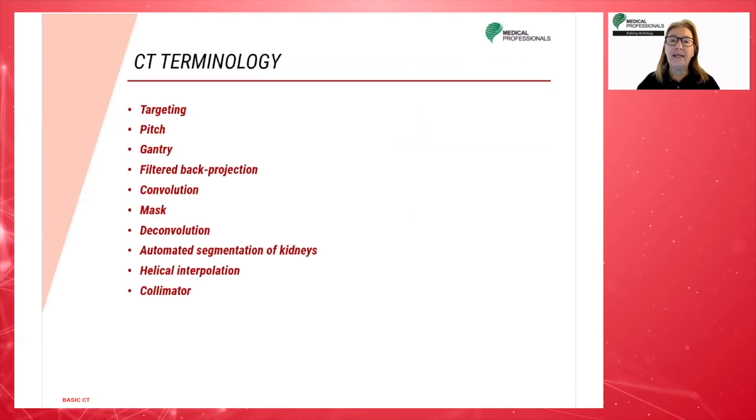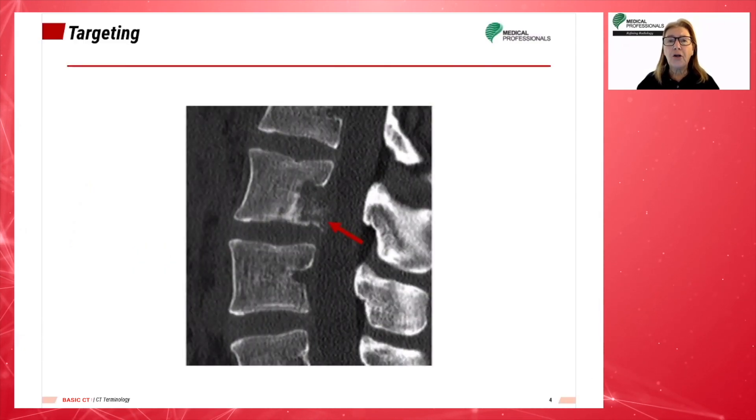We will begin by talking about targeting. Targeting is a magnification technique done through reformatting. The reformatting process reconstructs image data in a smaller pixel size to produce magnification with less distortion. This is done for areas where fine detail is needed, such as in the inner ear. Here you can see the magnified fracture in the lumbar spine.